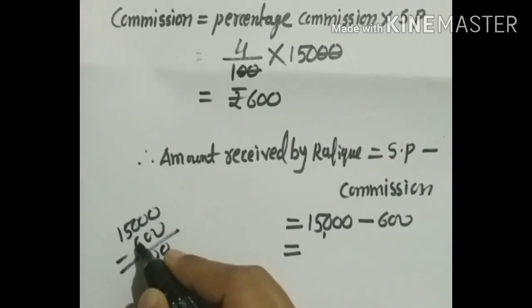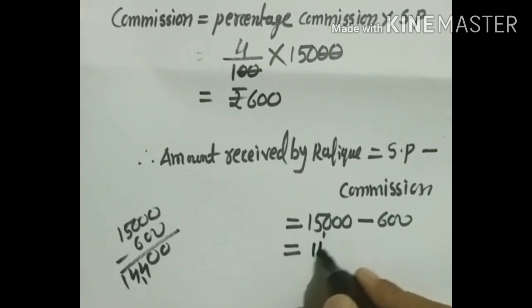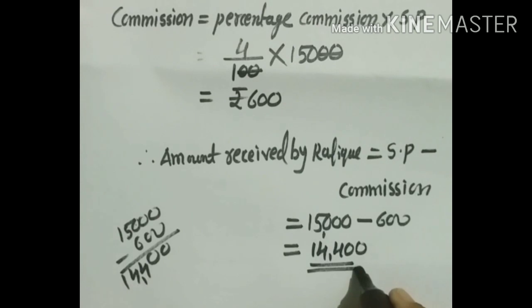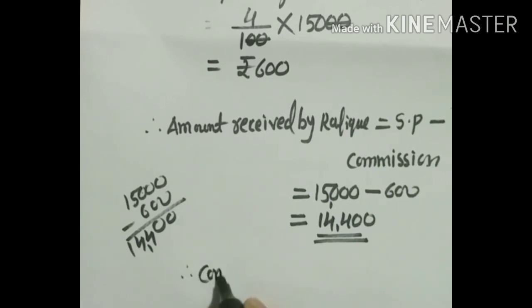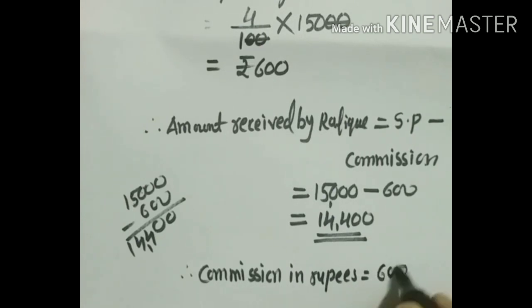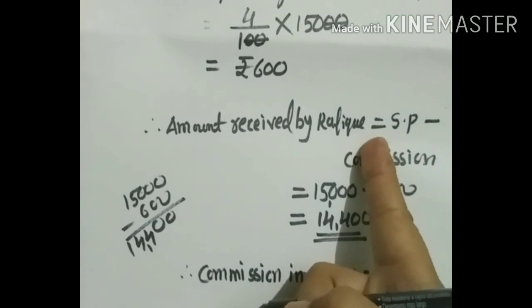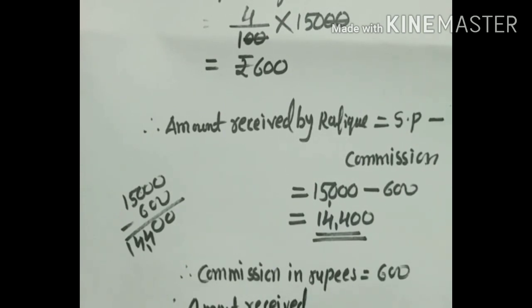15,000 minus 600: the units and tens give 0, 10 − 6 = 4, leaving 14,400. Therefore, commission in rupees = ₹600 and the amount received by Rafik = ₹14,400.